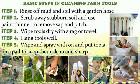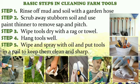Basic Steps in Cleaning Farm Tools. Step 1: Rinse off mud and soil with a garden hose. Step 2: Scrub away stubborn soil and use paint thinner to remove sap and pitch. Step 3: Wipe tools dry with a rag or towel. Step 4: Hang tools well. Step 5: Wipe and spray with oil and put tools in a pail to keep them clean and sharp.